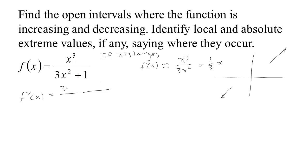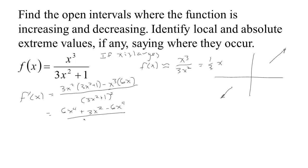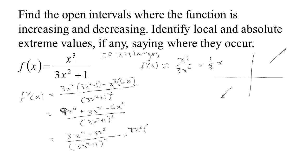To take the derivative we use the quotient rule: derivative of the top times the bottom minus the top times the derivative of the bottom, all over the bottom squared. Working through gives us 9x to the fourth minus 6x to the fourth plus 3x squared, all over (3x squared plus 1) squared, simplifying to 3x to the fourth plus 3x squared all over (3x squared plus 1) squared.